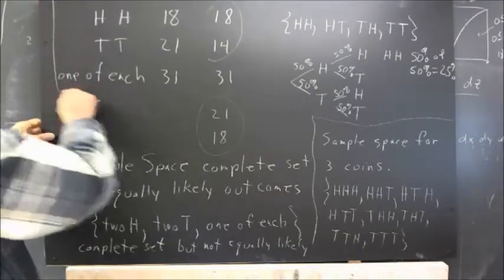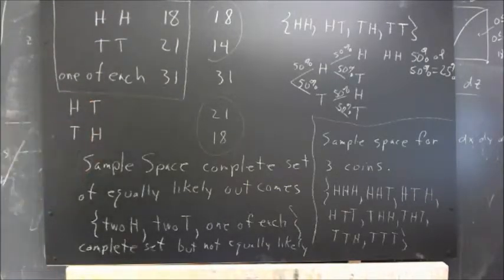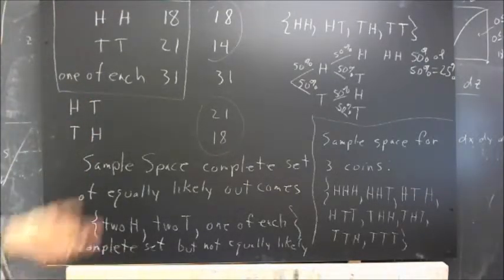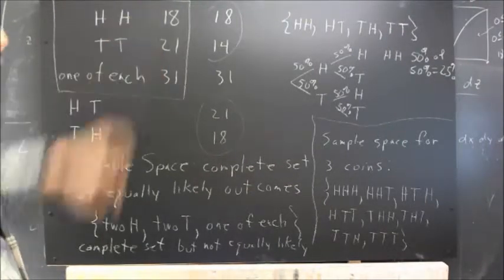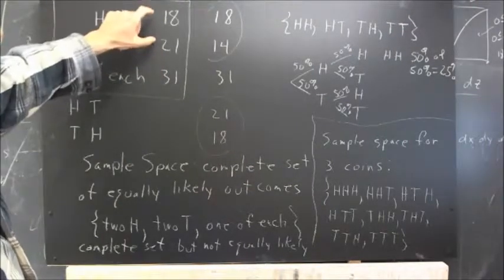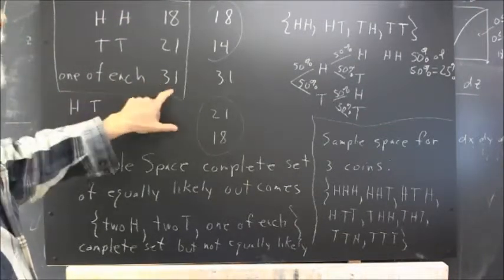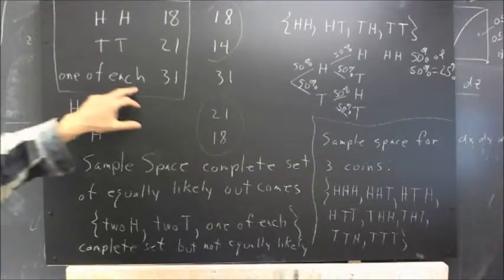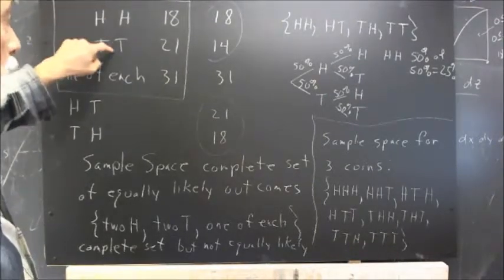So this is a result of one experiment that we did. We observed that this number seems to stick out compared to these two numbers. These two numbers are not too much different, but this one is a lot different. This seems to indicate that getting one of each is more likely than getting either two heads or two tails.